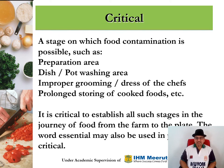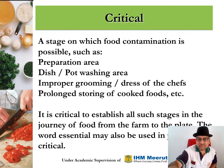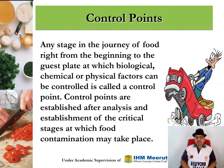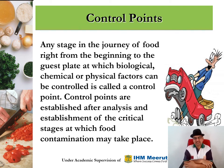It is critical to establish all such stages in the journey of food from farm to plate. The word 'essential' may also be used in place of the word 'critical.' Any stage in the journey of food, right from the beginning to the guest's plate, at which biological, chemical, or physical factors can be controlled is called a control point. Control points are established after analysis and identification of the critical stages at which food contamination may take place.